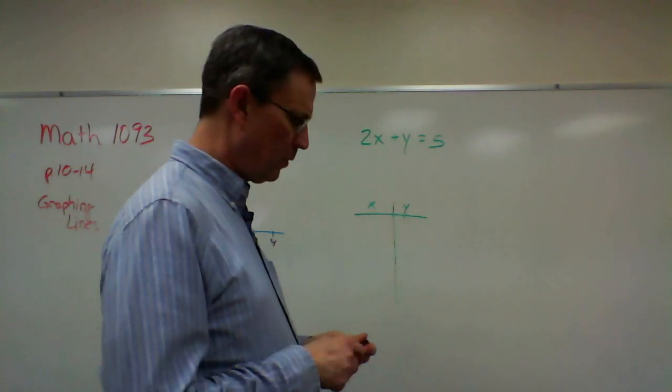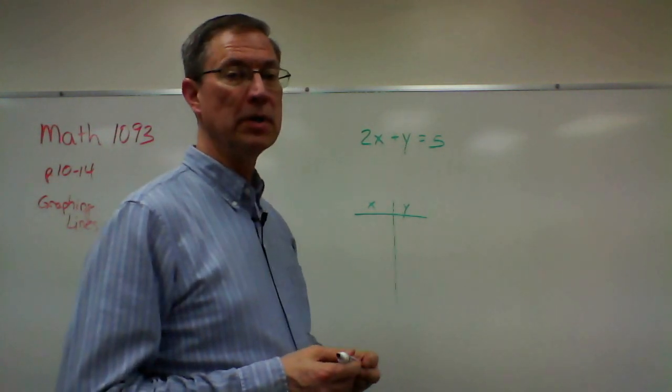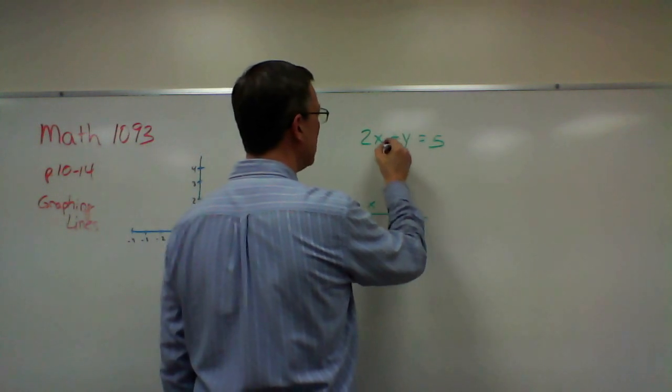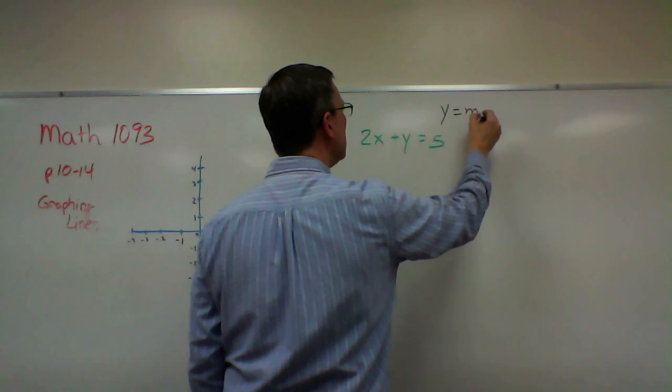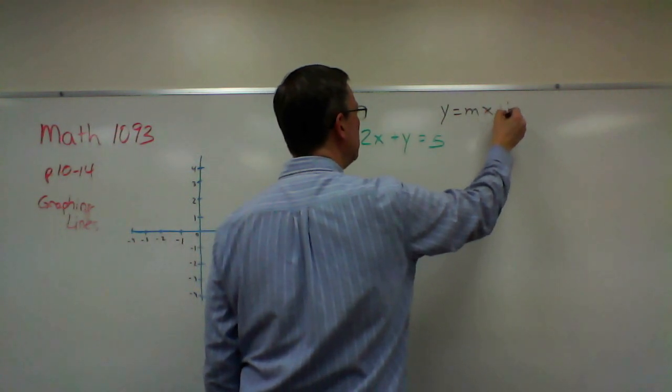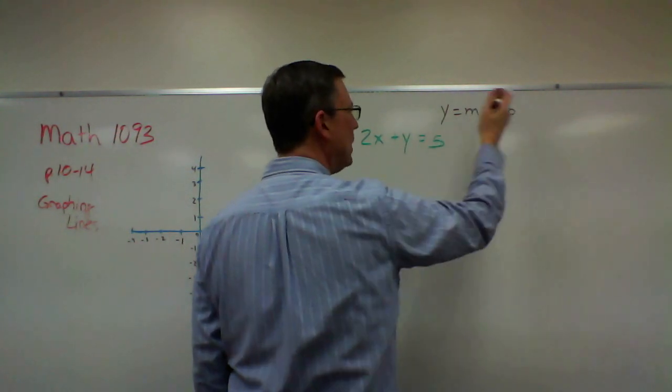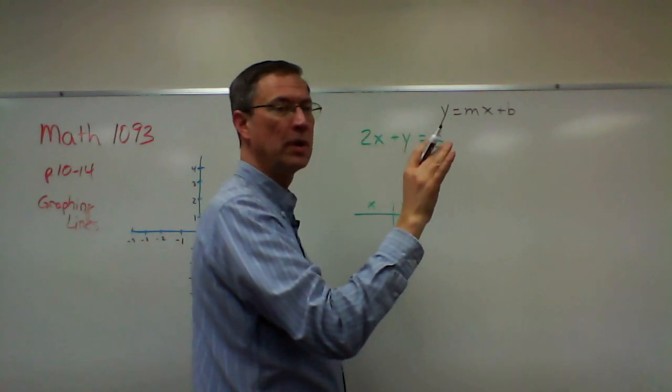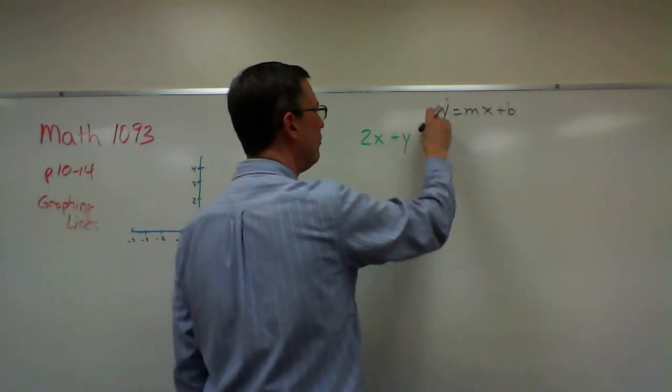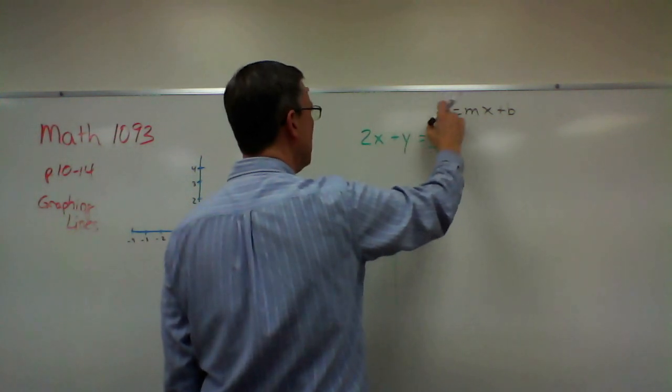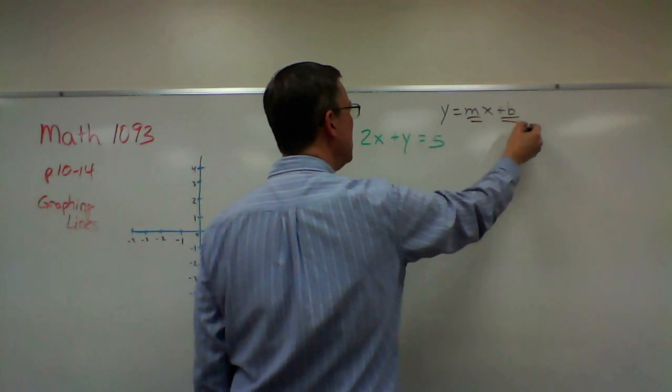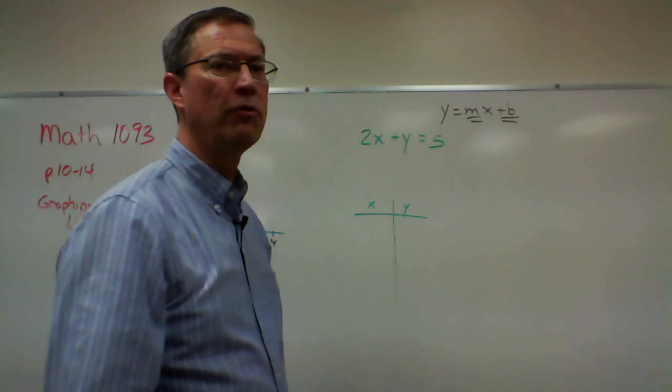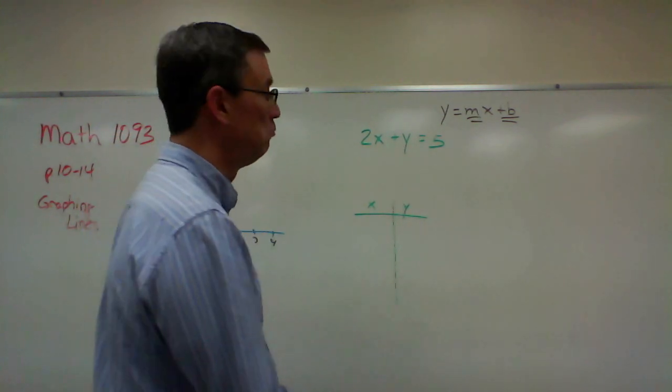The first thing we need to do in order to graph this is solve for y. So I want to get it in this form y equals mx plus b. I want the x on the right, y by itself, nothing in front of it, no fraction, decimal, or number, just plain old y. M and then a value here, a fraction or a number, sometimes it's zero.